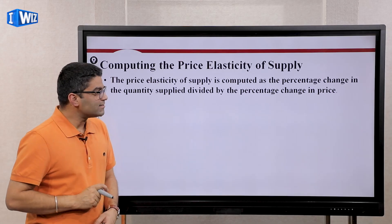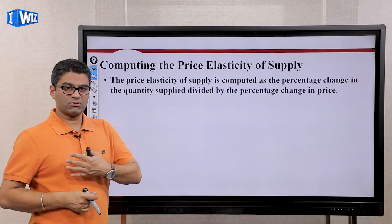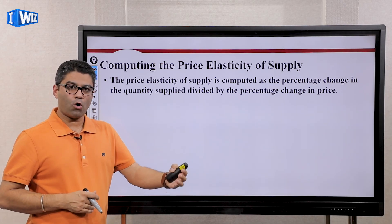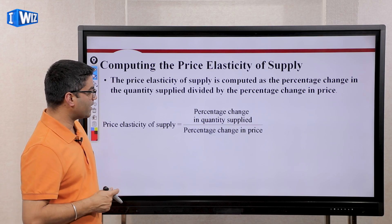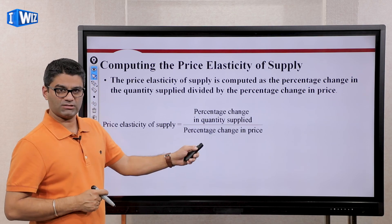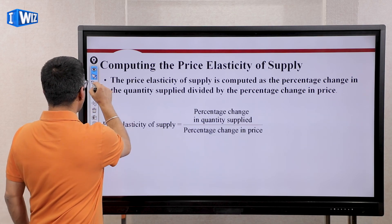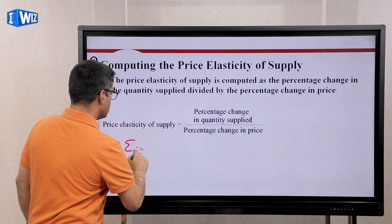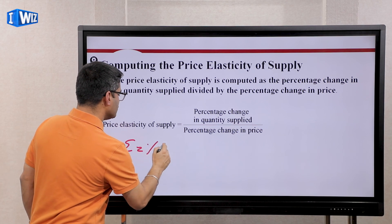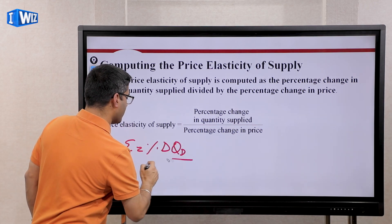Price elasticity of supply is the percent change in quantity supplied divided by the percent change in price. Price elasticity of demand, if you remember, was percent change in QD over percent change in price.